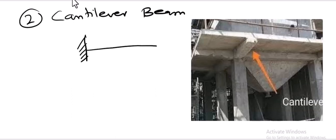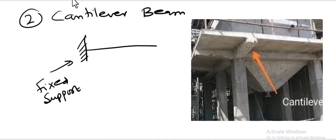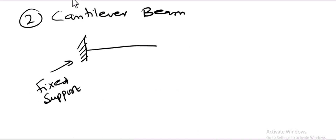The support shown here is called fixed support. In a cantilever beam, one end is always fixed. In the diagram drawn here, the left end of the beam shows the fixed support — but it's not necessary that the left end is always fixed. In a cantilever beam, the right end can also be fixed, and it will still be called a cantilever beam.